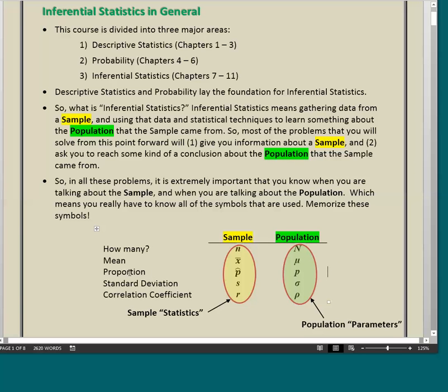If we're talking about a proportion, the proportion of a sample is called p-hat. The proportion of a population, the notation for that is p.